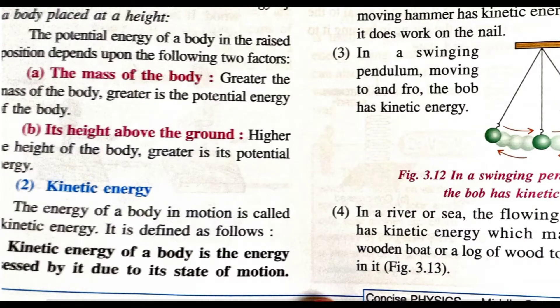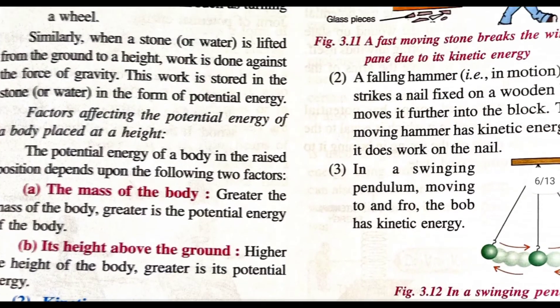Hello guys, today we are learning Standard 7 ICSC lesson number 3, Energy Part 2: Kinetic Energy. Energy of a body in motion is called kinetic energy. When the body is at rest it has potential energy, and when it starts to move, that energy is called kinetic energy. Kinetic energy of a body is energy possessed by it due to its state of motion. When the object comes in motion, the change in energy is called kinetic energy.